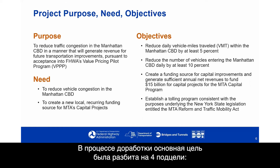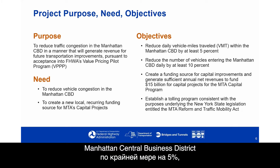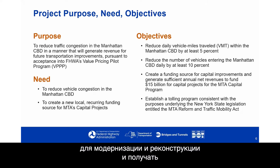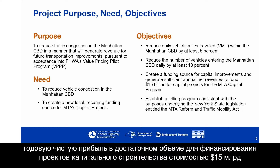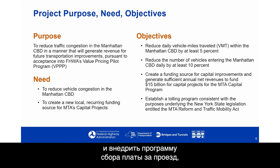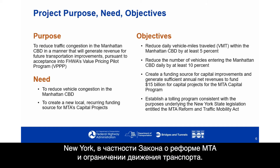The purpose and need are refined through four objectives: to reduce daily vehicle miles traveled, or VMT, within the Manhattan CBD by at least 5%; to reduce the number of vehicles entering the CBD daily by at least 10%; to create a funding source generating sufficient annual net revenue to fund $15 billion for MTA capital projects; and to establish a tolling program consistent with the MTA Reform and Traffic Mobility Act.